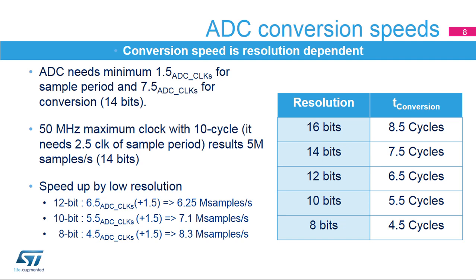The ADC needs a minimum of 1.5 clock cycles for sampling and 7.5 clock cycles for conversion in 14-bit mode. With a 50 MHz ADC clock, it can achieve 5 mega-samples per second. For higher sampling speed, it is possible to reduce the resolution down to 8 bits, allowing the sampling speed to go up to 8.3 mega-samples per second.